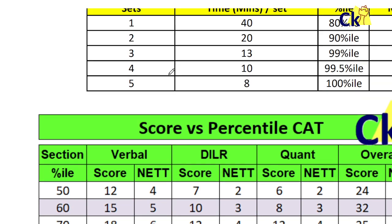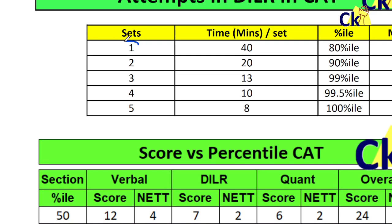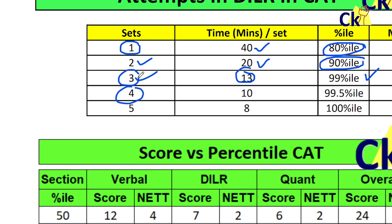So to clear the cutoff, first I have to see how much I can attempt. One set attempt — I will spend 40 minutes per question — you can get 80 percentile. Two sets attempt, 20 minutes per set, I will get 90 percentile. Again it depends on accuracy; if you do 5 sets and do all 5 wrong, obviously you will get 0 or minus. Three sets, 13 minutes per set, target 99 percentile. So the moment you increase the number of sets, theoretically I should maximize my attempt and do as many sets as possible. But it is not possible to do more because time is going less.